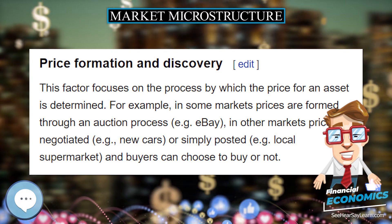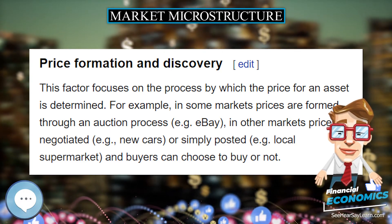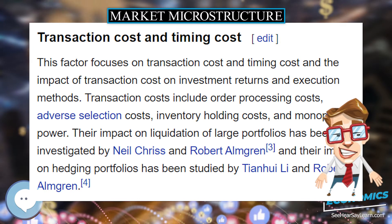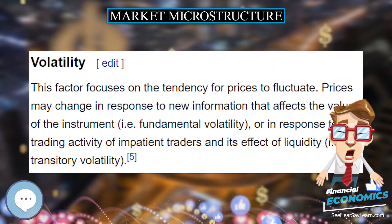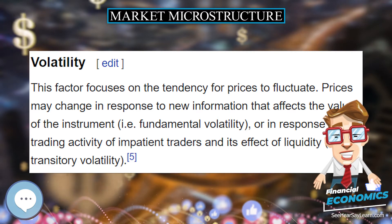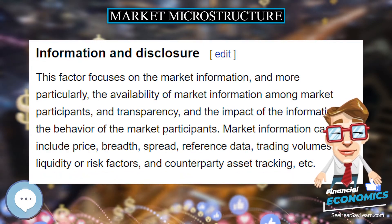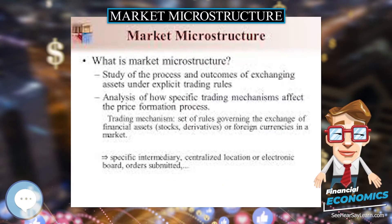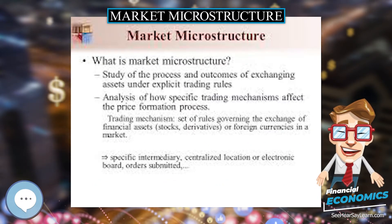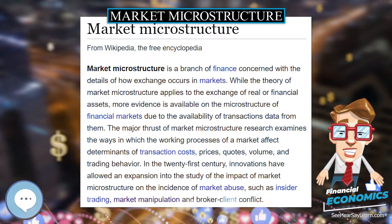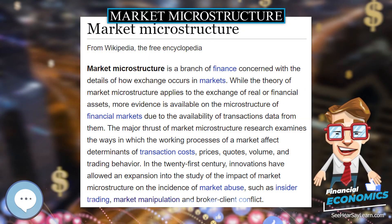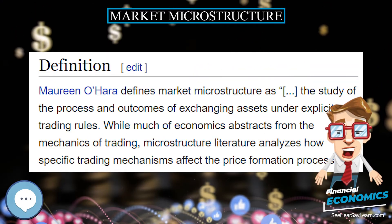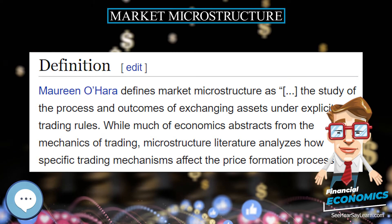Transaction cost and timing cost focuses on transaction cost and timing cost and the impact of transaction cost on investment returns and execution methods. Transaction costs include order processing costs, adverse selection costs, inventory holding costs, and monopoly power. Their impact on liquidation of large portfolios has been investigated by Neil Krises and Robert Almgren, and their impact on hedging portfolios has been studied by Tian Wheelie and Robert Almgren.